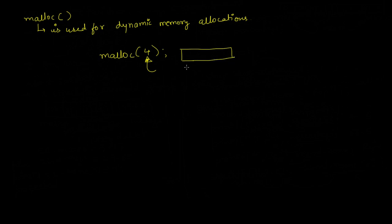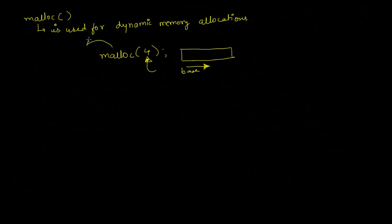This memory will be continuous, just like in case of arrays. If we write int a[10], that means there will be 10 continuous memory allocations. In the same way, in case of malloc there will be 4 continuous memory allocations, and then it is going to return the base address of those memory locations.